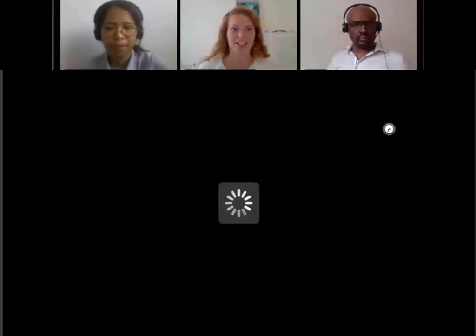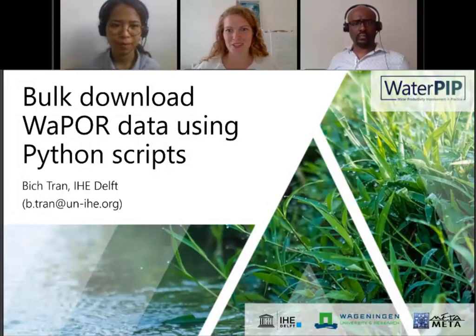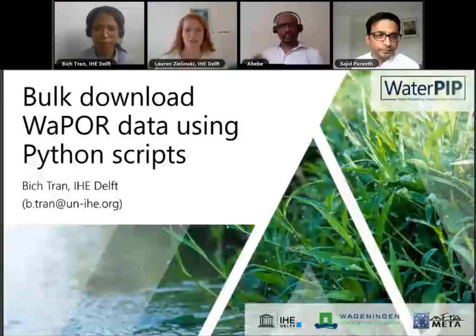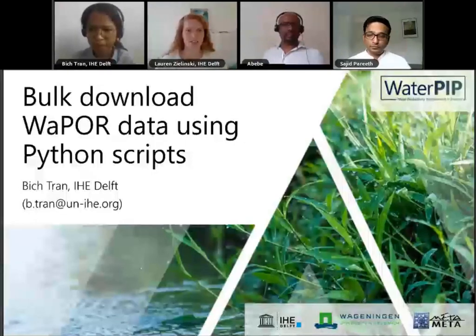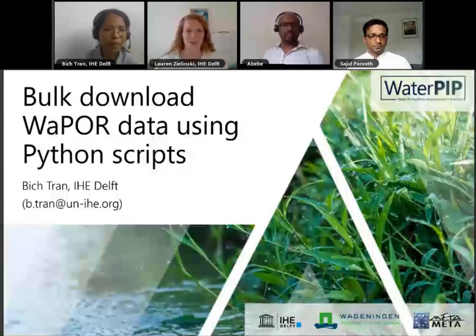Thank you, Sajid. That was an explanation of how to calculate different performance indicators in QGIS. If you missed any steps, you can rewatch the videos on the WaterPIP Project website or waterchannel.tv. Now we're going to move on to Bic Tran, who will talk about how to bulk download WAPOR data using Python.